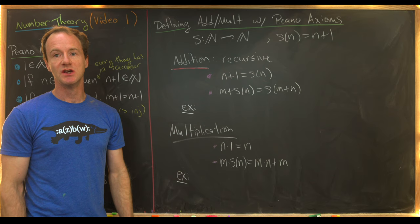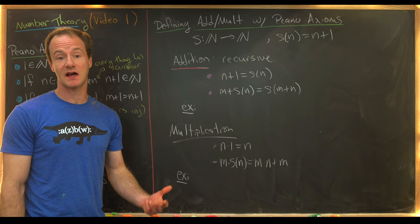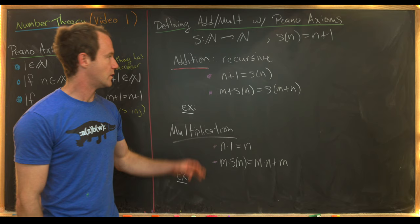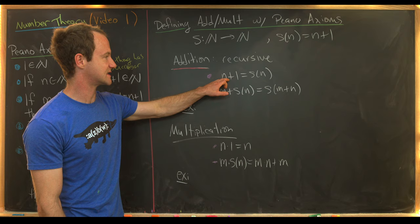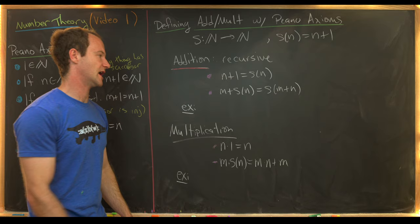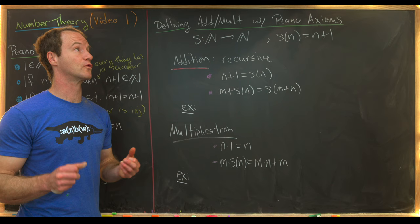We can't yet do something like five plus four — that's impossible so far. But we can find the number that's after five, which is obviously six. If we can find the next number, we can actually define addition and multiplication recursively. We define addition as follows: the successor of n is n plus one, and we recursively define m plus the successor of n as the successor of m plus n.